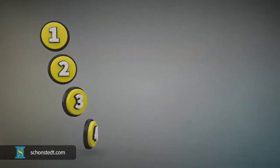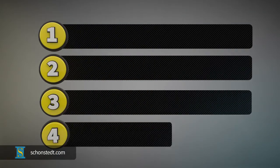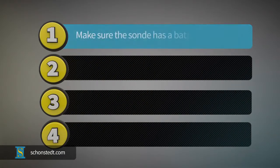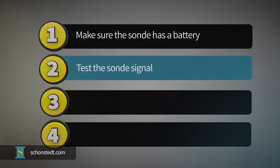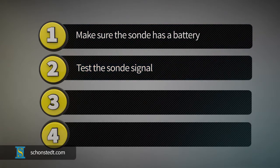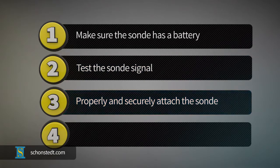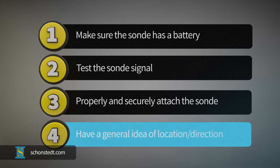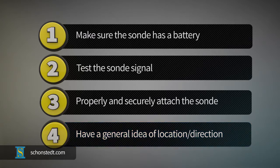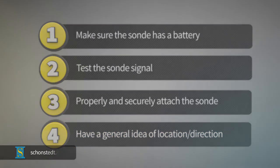In summary, before attempting to locate a sonde, always remember: 1. Make sure the sonde has a battery. 2. Test the sonde signal with your receiver before inserting it into a pipe. 3. Properly and securely attach the sonde to the snake or mechanical means to push it through the pipe. 4. Have a general idea of the location and direction in which the sonde will be moving once inserted in the pipe.